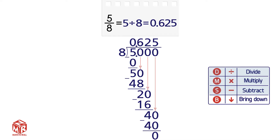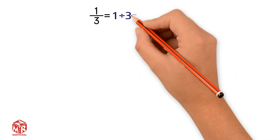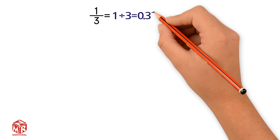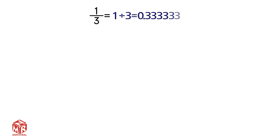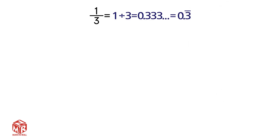Sometimes, when using long division to convert fractions to decimals, we can't get 0 as a remainder. We can divide forever and we will never get 0 as a remainder. An example of this is 1 third. You can divide 1 by 3 using long division or a calculator and after the decimal point you will have an infinite number of 3's. This is known as a repeating decimal. We can use a repeating bar to represent this type of decimal. We write the bar above the number that's repeating. This keeps our answers short and clear.